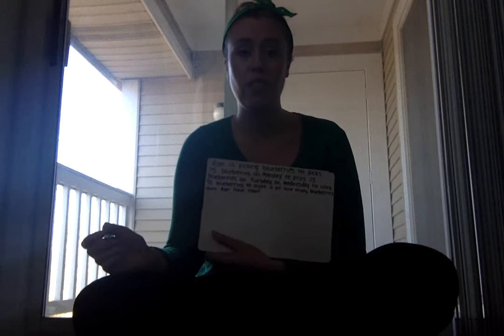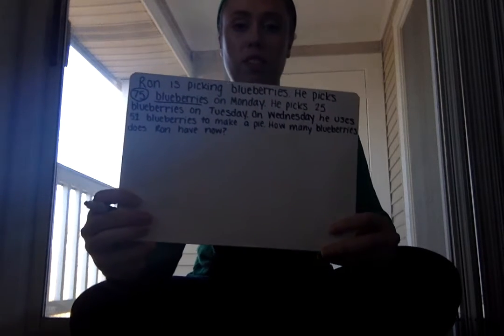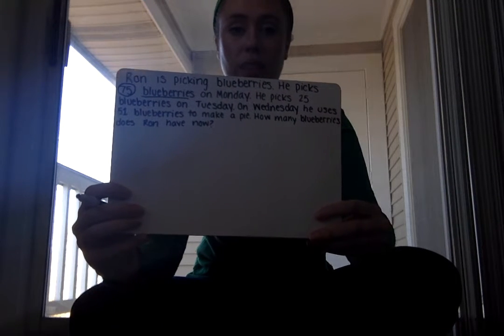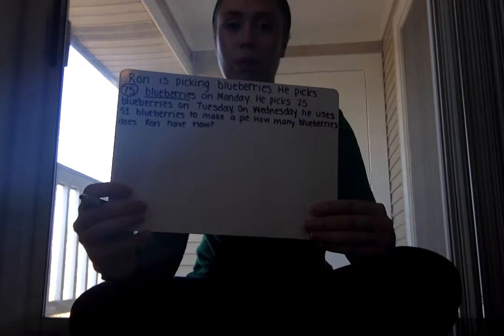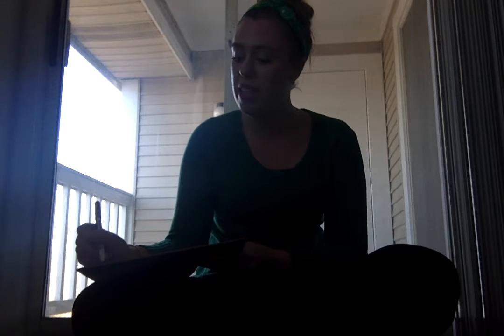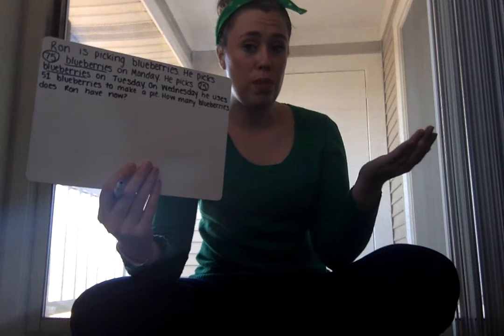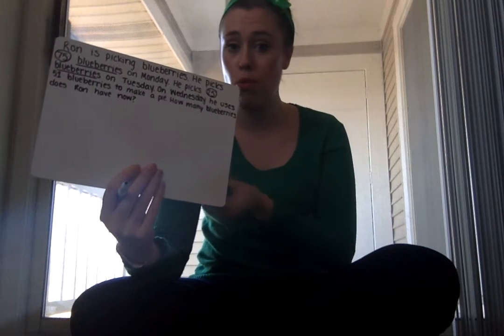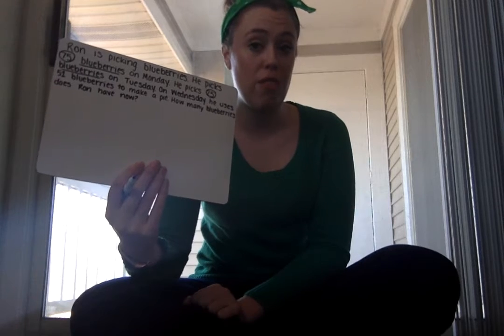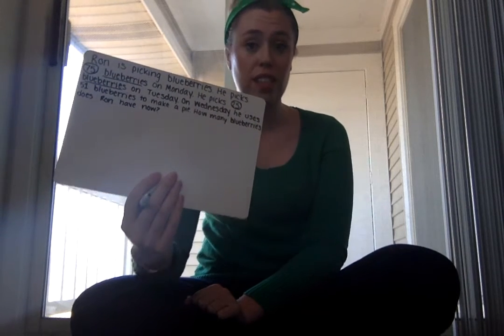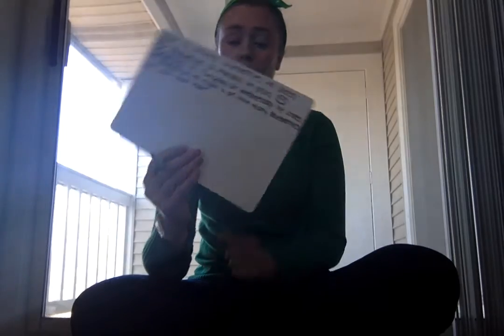Looking at this problem, the first thing I notice is that he has 75 blueberries on Monday. I've circled my number and underlined my label just to help me think — 75 blueberries, Monday. On Tuesday he picks 25 blueberries. I know that logically if he starts with some blueberries and picks more, I need to add those two numbers together to find the total. So step one is adding our first two numbers.